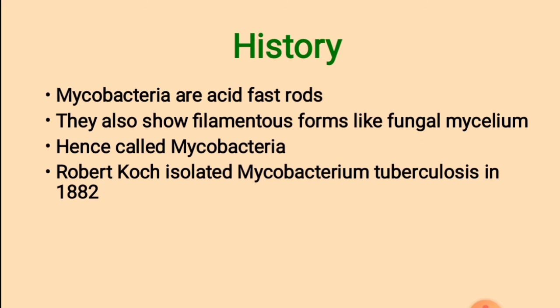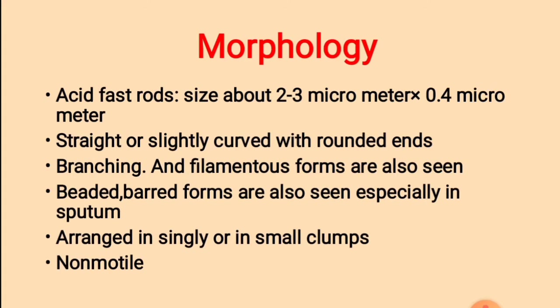Robert Koch was the first scientist to isolate Mycobacterium tuberculosis in 1882. Regarding morphology, Mycobacteria are acid-fast rods. The size is about 2–3 micrometers in length and 0.4 micrometers in breadth. They are straight or slightly curved with rounded ends. Branching and filamentous forms are also seen; beaded and barred forms are also seen especially in sputum.